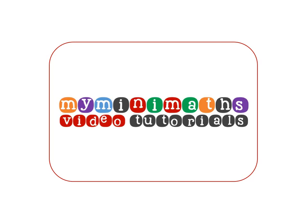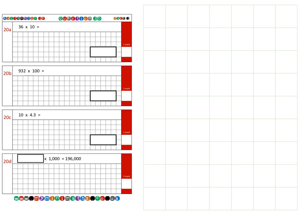Hello and welcome to myminimaths.co.uk video tutorials. Today we're going to be looking at arithmetic 16 target question 20, which is multiplying both whole numbers and decimal numbers by 10, 100, and 1000.